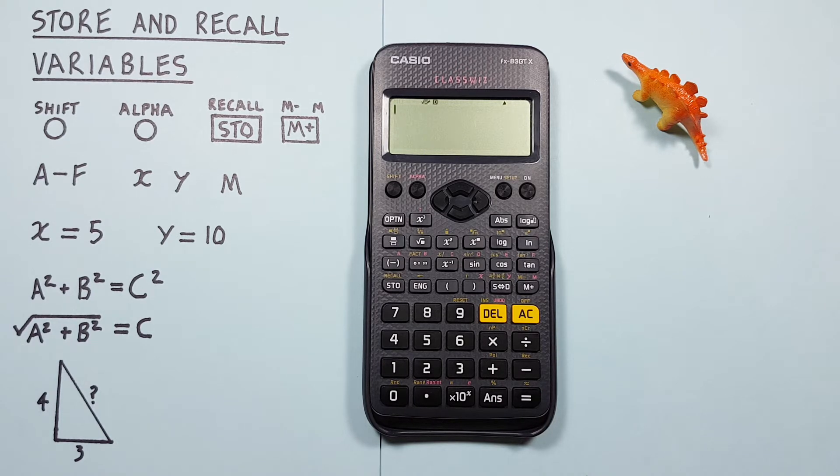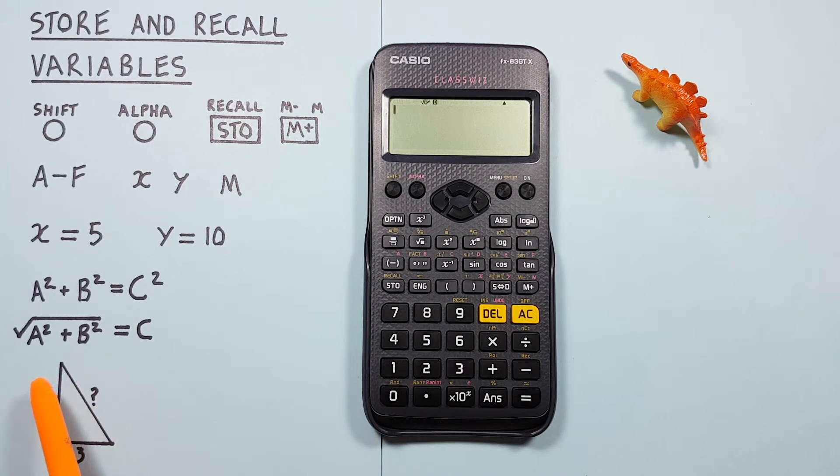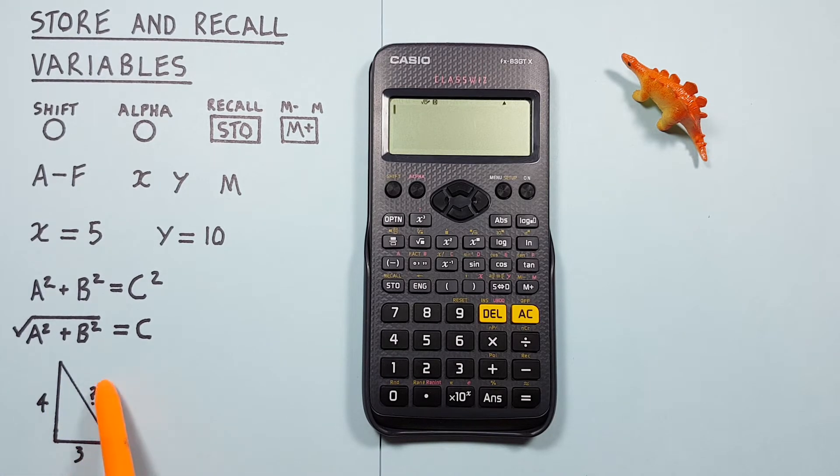The memory function is especially helpful when using variables in long or complex formulas, like for example to solve this triangle using Pythagoras, which we know is A squared plus B squared equals C squared and can be rewritten as the square root of A squared plus B squared equals C.